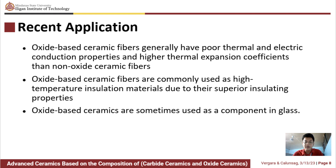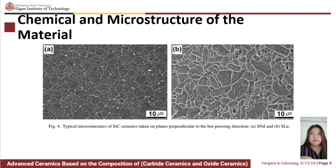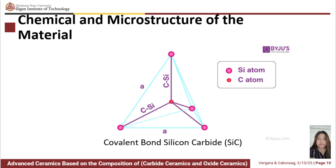These advancements signify the growing range of applications of carbide ceramics and oxide ceramics across diverse industries. For the chemical and microstructure of the material, figure 4 shows typical microstructure of SND and SLU specimens taken on planes perpendicular to the hot-pressing direction. There is no observable difference in the microstructure parallel and perpendicular to the hot-pressing direction in the SND specimen. This is an illustration for the covalent bond of silicon carbide.